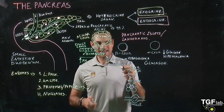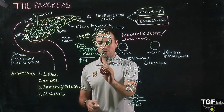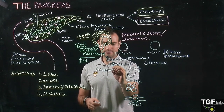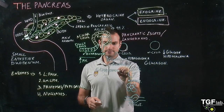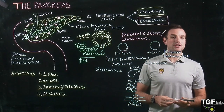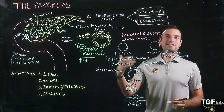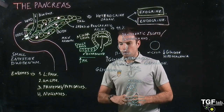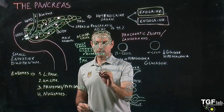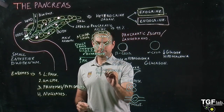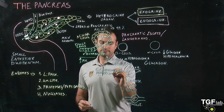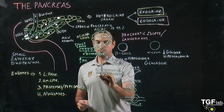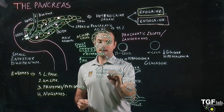In the liver, insulin is going to promote glycogenesis, which is the transformation of glucose into glycogen. So we are removing the glucose from the blood. Insulin is also going to promote protein synthesis and more amino acid uptake.